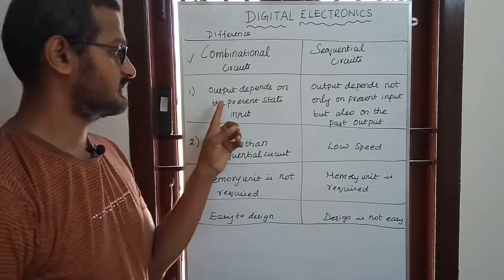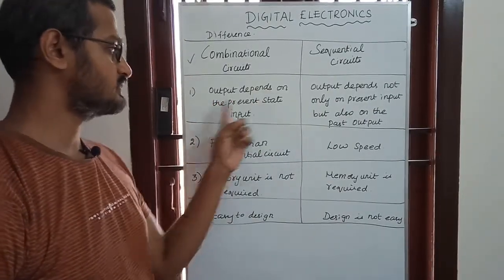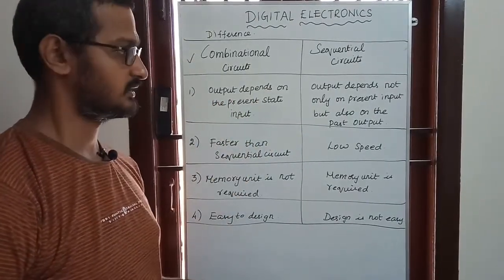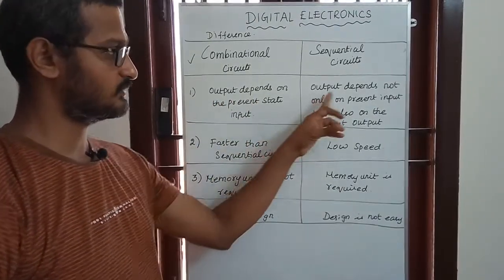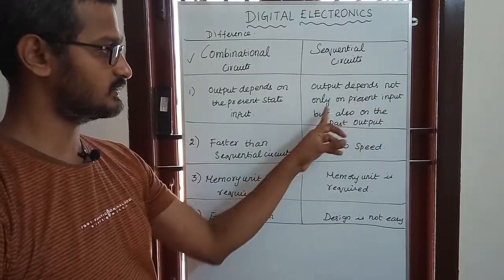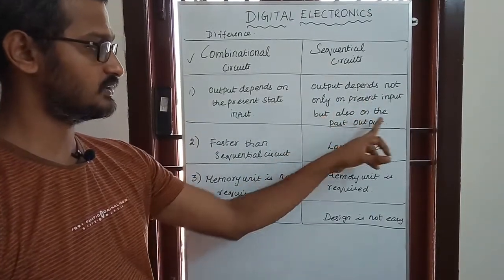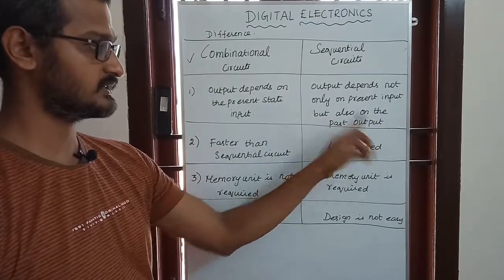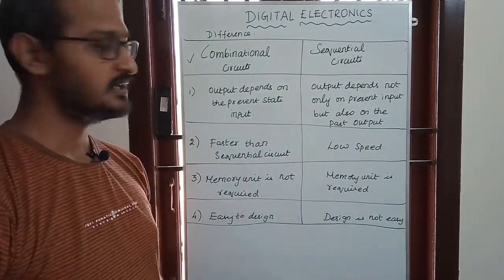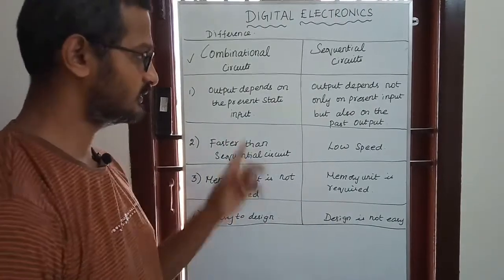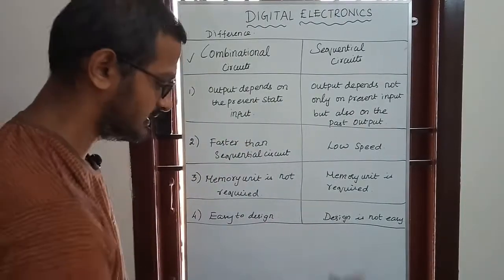Let's talk about the key difference. For combinational circuits, the output depends only on the present state input. For sequential circuits, the output depends not only on the present state input, but also on the past output.